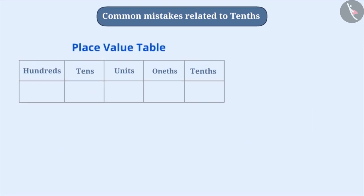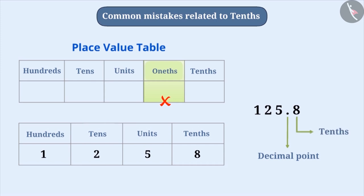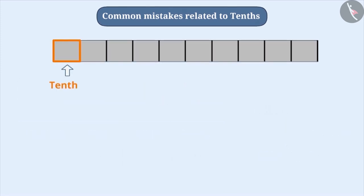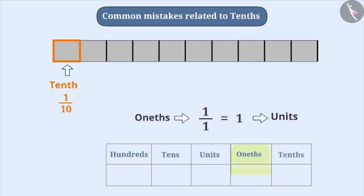Some students also add the location of 1ths after the location of the units although there is no such place. Tenth position is after the decimal point. The tenth part of a thing is represented as 1 by 10. So, 1th means 1 by 1 which means 1 and we represent 1 in the units place only. So, we don't require the 1th position and that is why we don't show it.